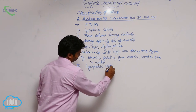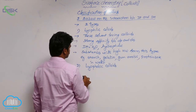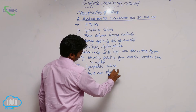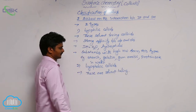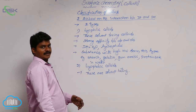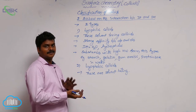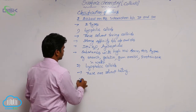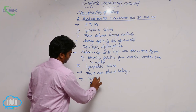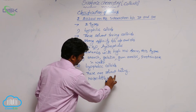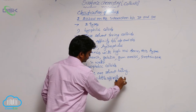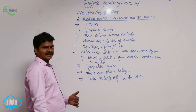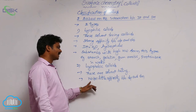The second type is lyophobic colloids. These are solvent-hating colloids, meaning there is no affinity or little affinity between the dispersed phase and dispersion medium. There is no or very little attraction between DP and DM.